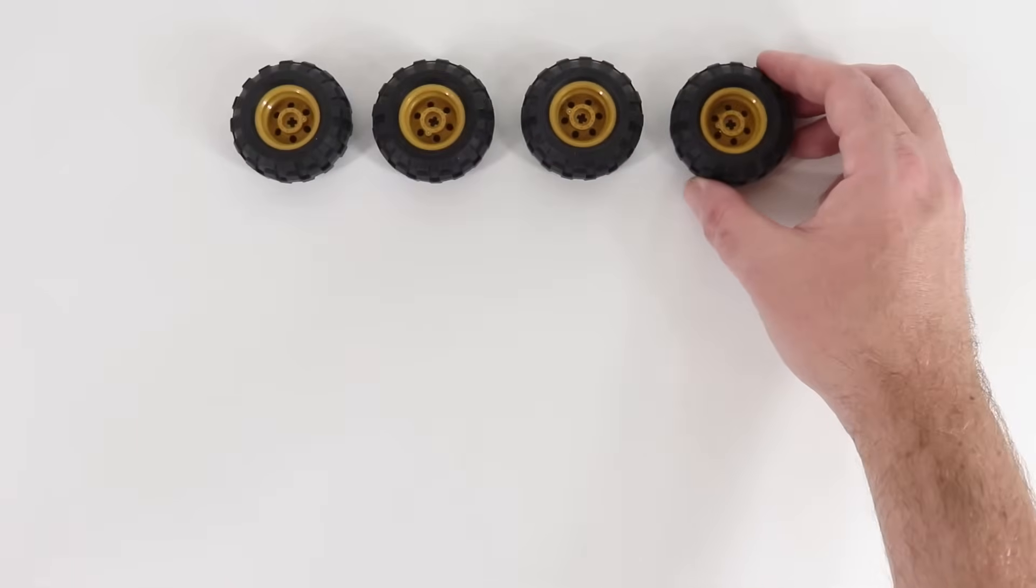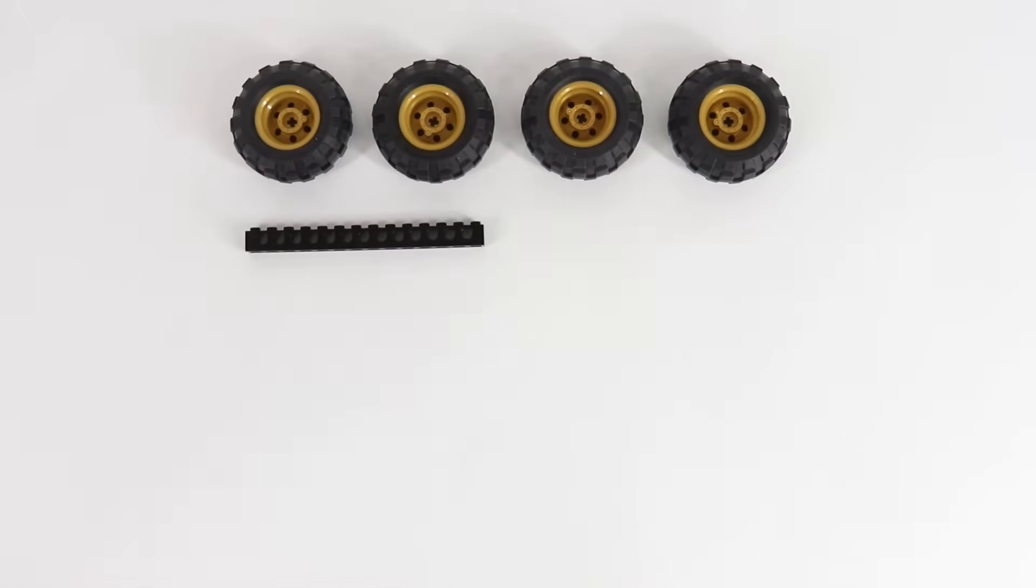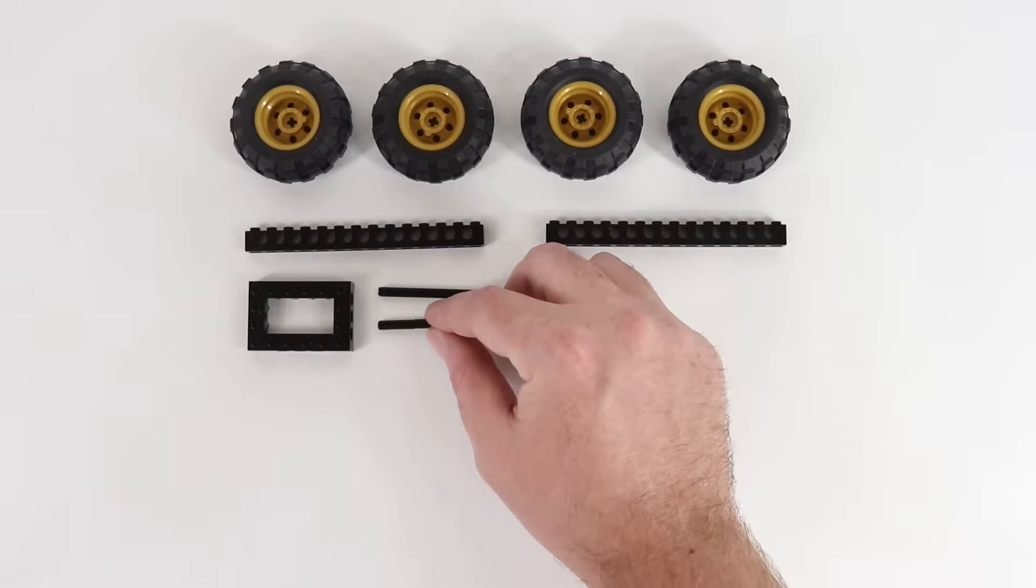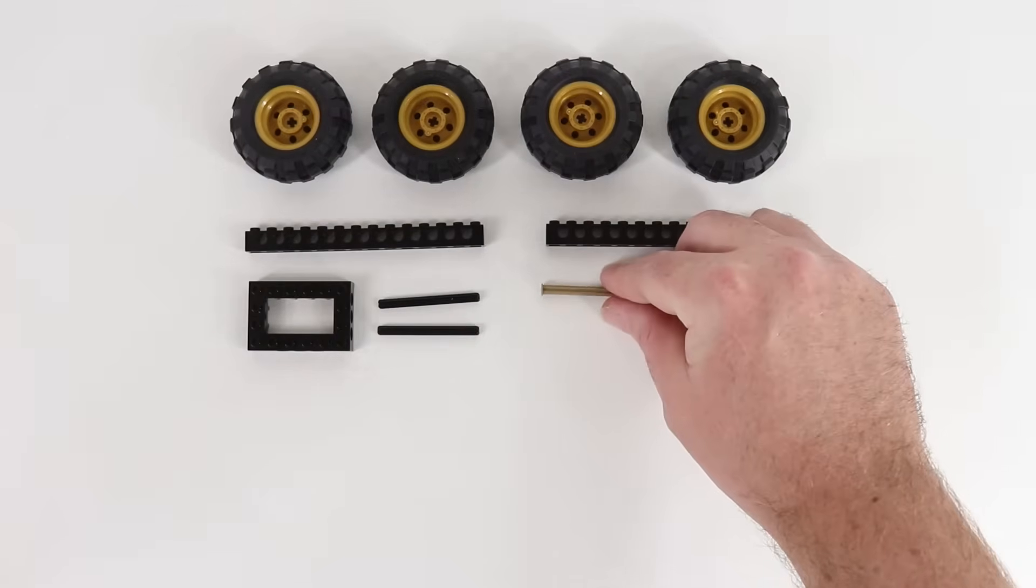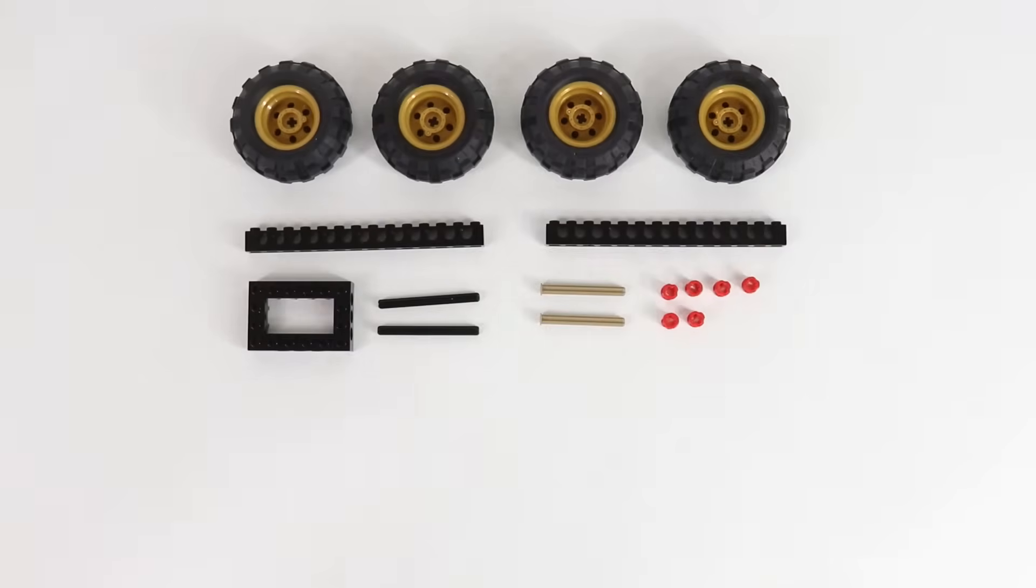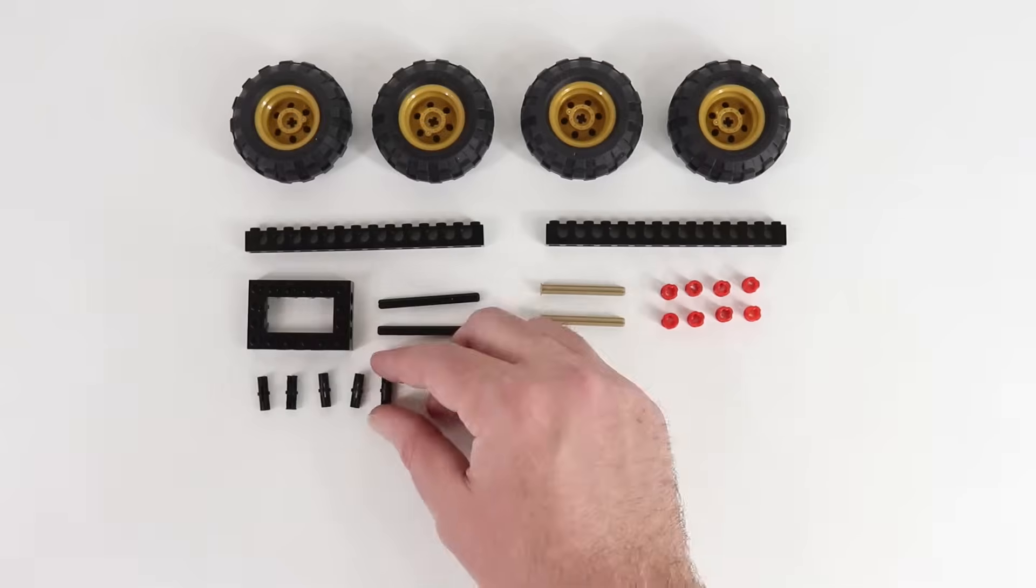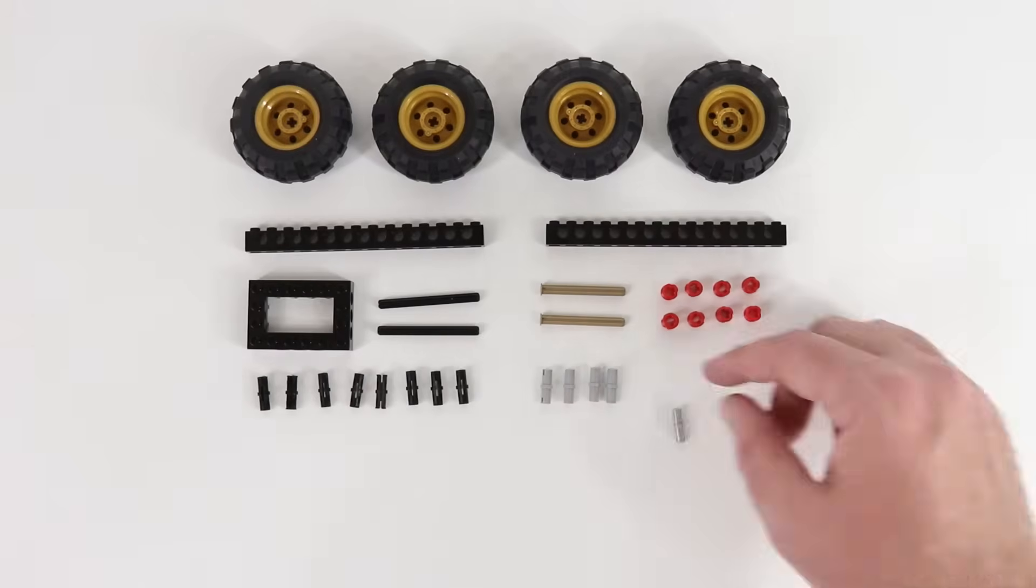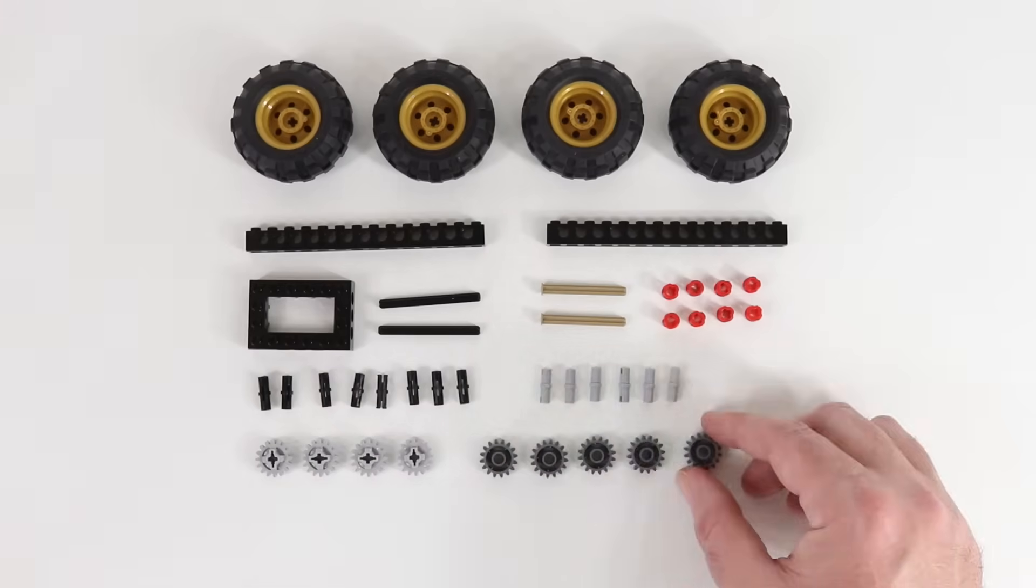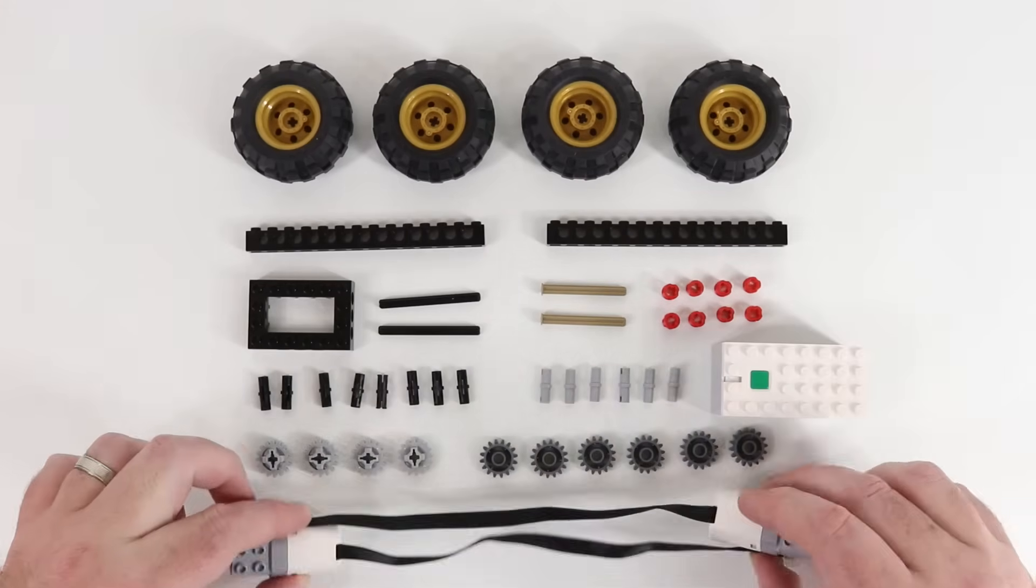Here's what you're going to need. You'll need four wheels and tires, two 14-long Technic bricks, one 4x6 Technic brick, two 6-long Technic axles, two 5-long Technic axles with stops on one end, eight Technic bushings, eight Technic pins with friction, six Technic pins with no friction, four 16-tooth gears, six 16-tooth carrier gears, a battery box, and two motors.